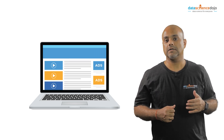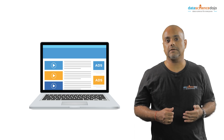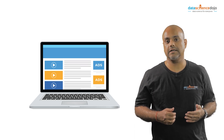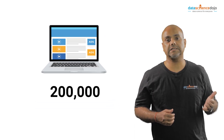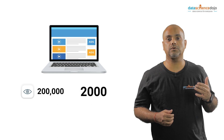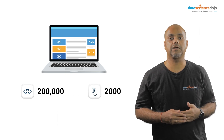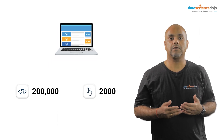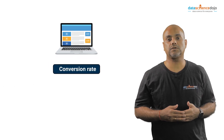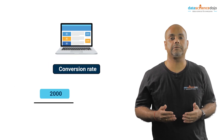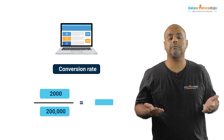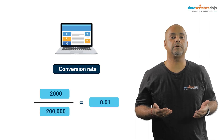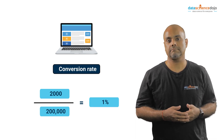For example, on the first day of running the ad, 200,000 people see the ad and only 2,000 of them click on it. Conversion rate is 2,000 divided by 200,000, which comes out to be 0.01, or 1%.